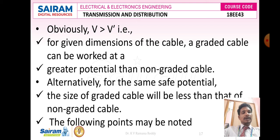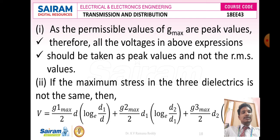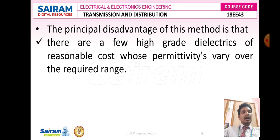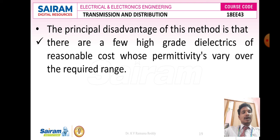The following points may be noted: at permissible values of Gmax, which are peak values, all voltages in the above expressions should be taken as peak values and not RMS values. If the maximum stress in the three dielectrics is not the same, then V = (g₁max/2)·d·ln(d₁/d) + (g₂max/2)·d₁·ln(d₂/d₁) + (g₃max/2)·d₂·ln(D/d₂). The principal advantage of this method is that there are a few high-grade dielectrics of reasonable cost whose permittivity varies over the required range, allowing the cable to handle higher electrical stress without reducing dielectric strength or causing breakdown.